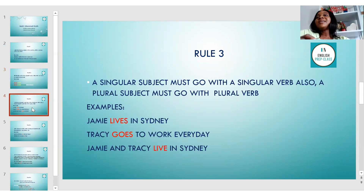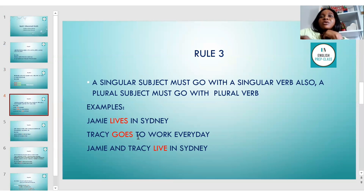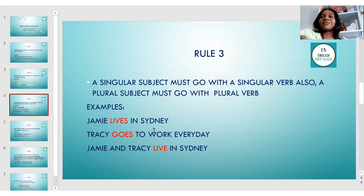Rule number three: a singular subject must go with a singular verb, and a plural subject must go with a plural verb. For example, 'Jamie lives in Sydney' — Jamie is a singular subject, and 'lives' is the singular verb with an S added. Similarly, 'Tracy goes to work every day' — Tracy is singular, so we use 'goes,' not 'go.' If you use 'go' with a singular subject, you're not getting it right.